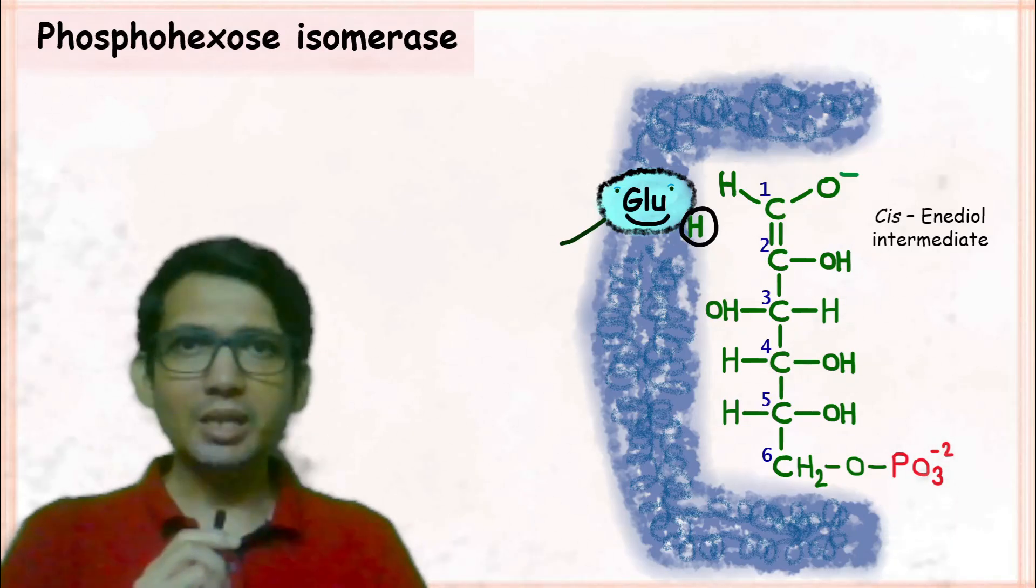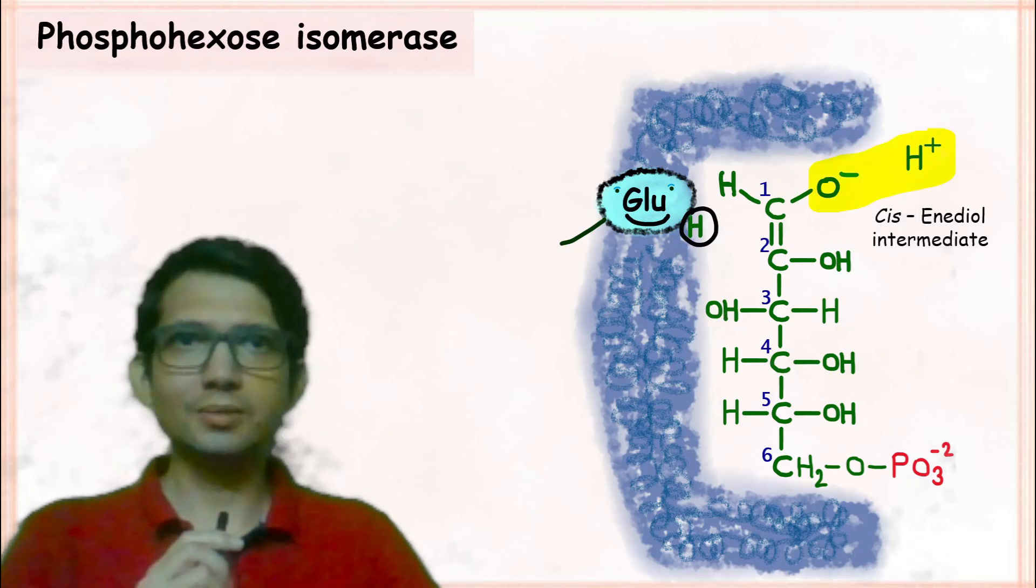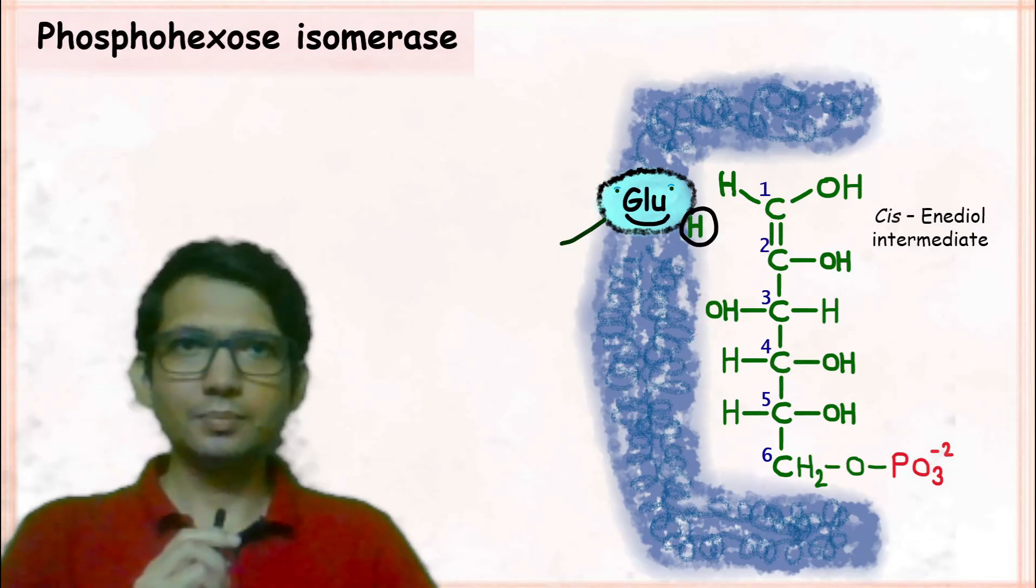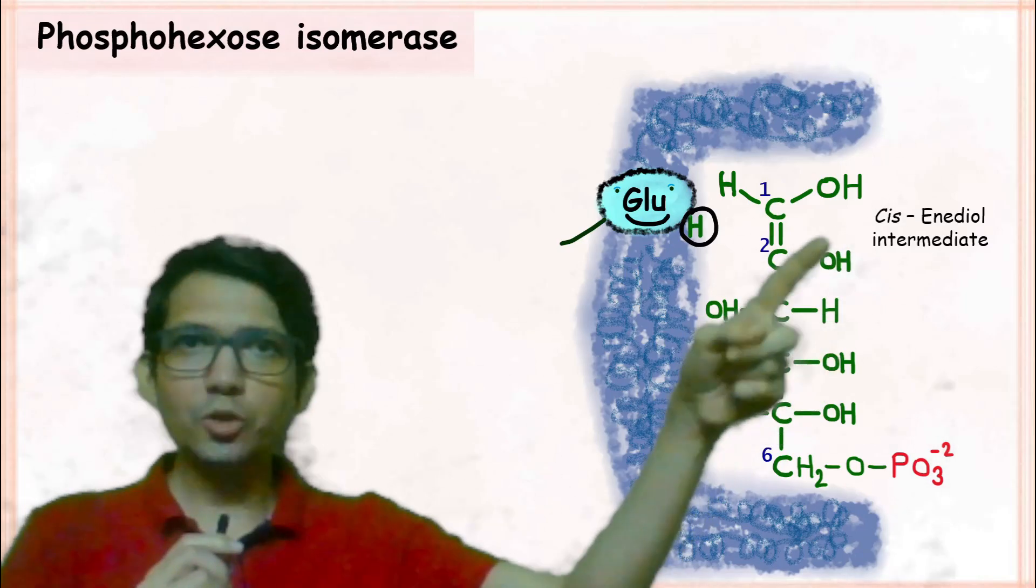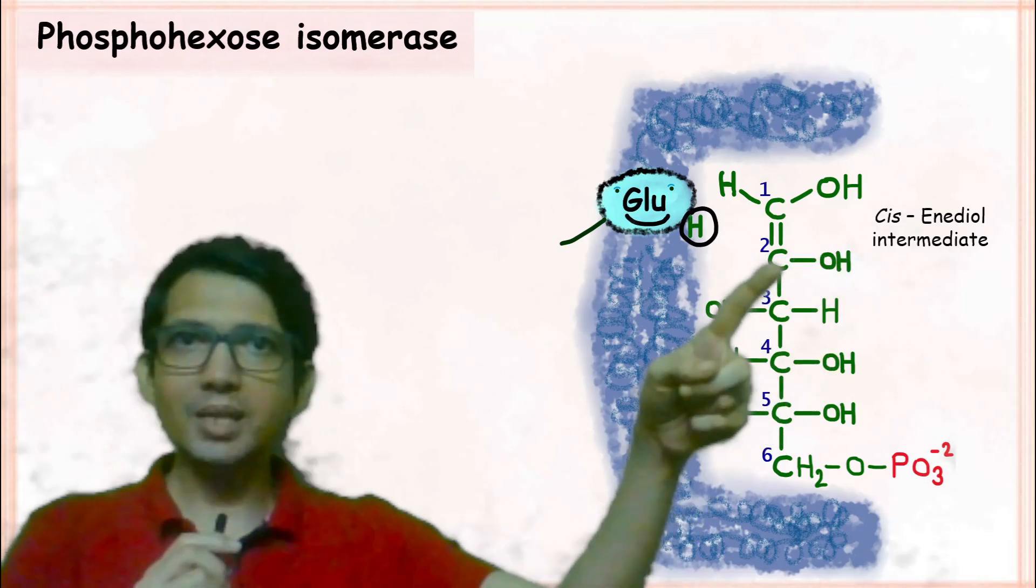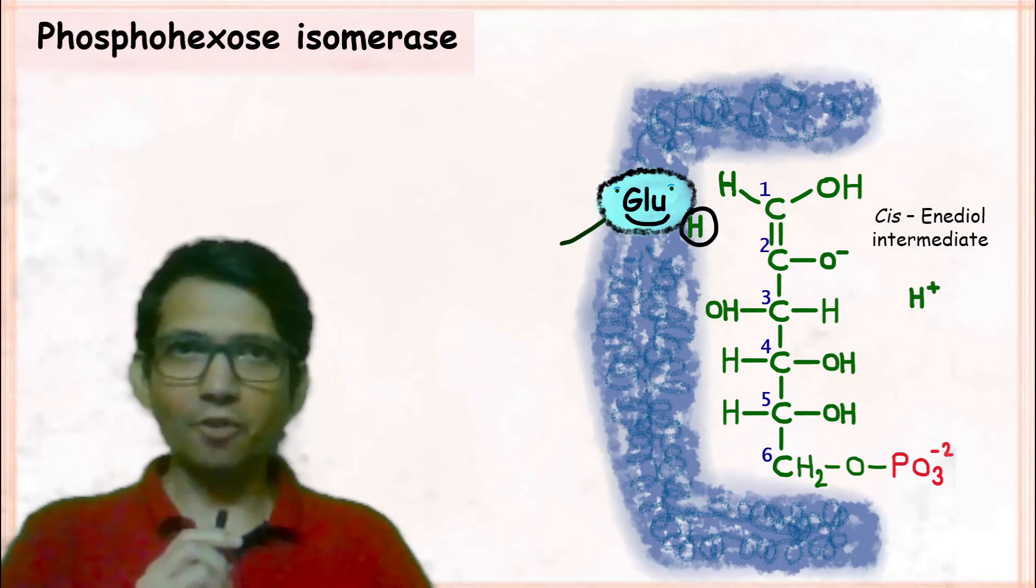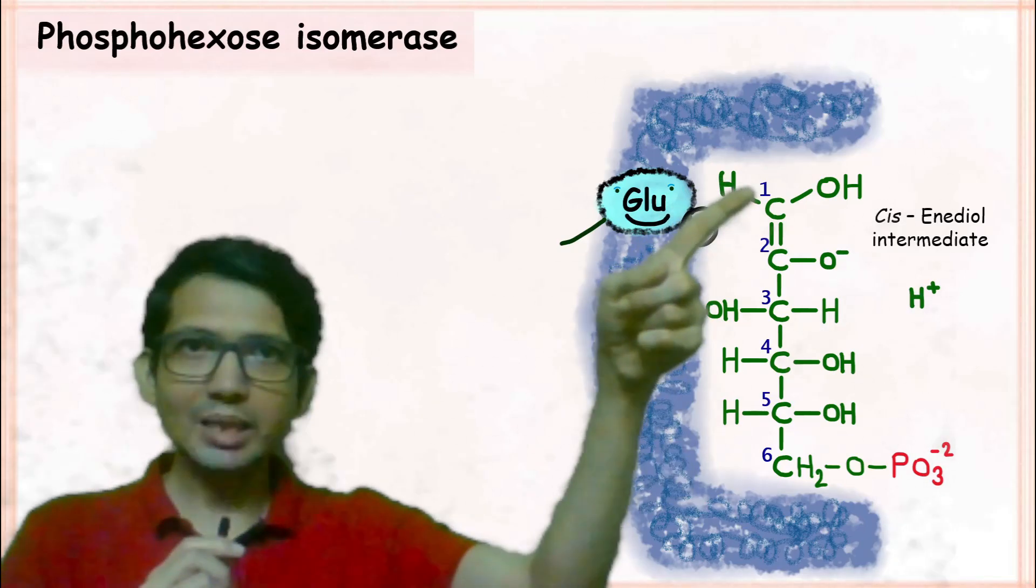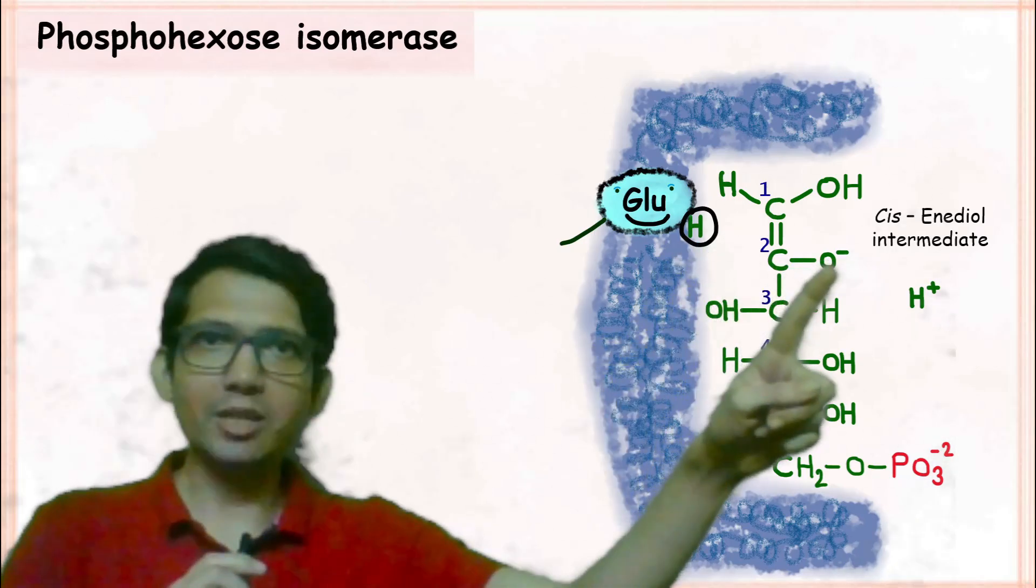Once this intermediate is formed, this oxyanion accepts the hydrogen from the surrounding environment. In the next step, the hydrogen from the OH group at the C2 carbon atom is lost. As a result of this, the double bond which is in between C1 and C2 now shifts between this carbon and oxygen.